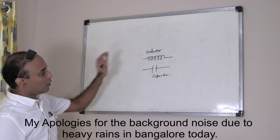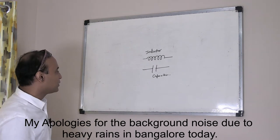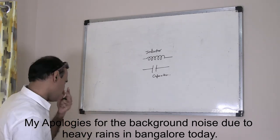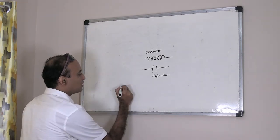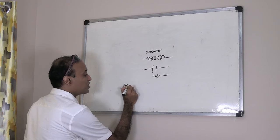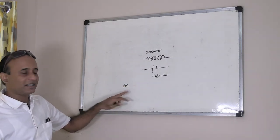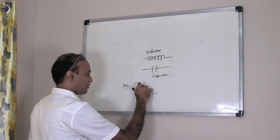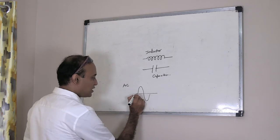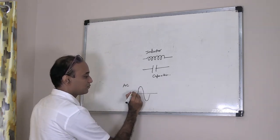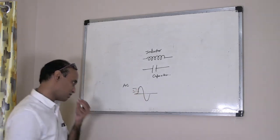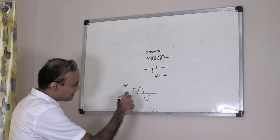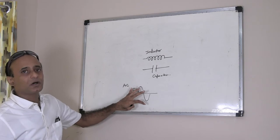Before looking into how these two components work, let us look into one simple aspect of an audio signal — audio encoded as an electrical signal consists of AC components. AC stands for alternating current. An AC component is a wave in which its amplitude varies with time — it is either increasing or decreasing continuously.